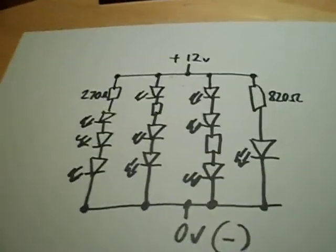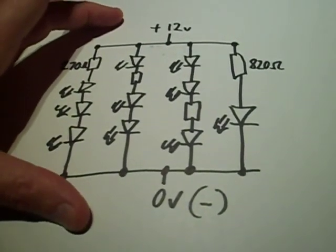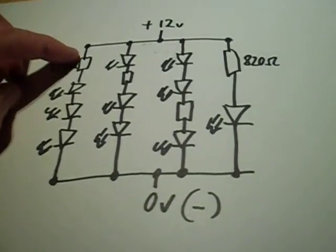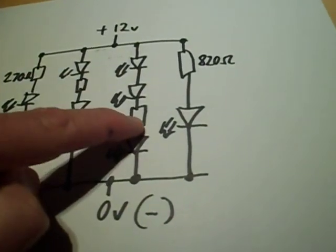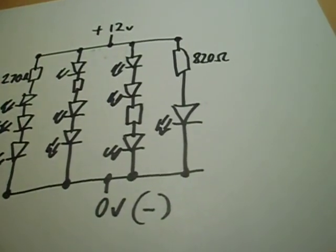And I've scribbled roughly. This is the sort of arrangement, it's very simple, it's just the common 12 volt rail and the ground rail. And the resistor can go anywhere in the circuit of LEDs. It doesn't really matter, just so long as it's in line to limit the current.